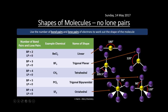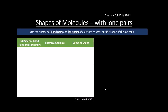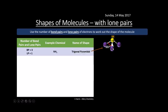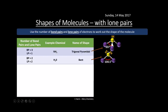Now for shapes with lone pairs. With 3 bond pairs and 1 lone pair, we get a trigonal pyramidal shape - ammonia is an example with a bond angle of 107°, reduced from 109.5° by 2.5° for the lone pair. With 2 bond pairs and 2 lone pairs, we get a bent molecule - water is the example with a bond angle of 104.5°, reduced by two lots of 2.5° (5° total) from the tetrahedral base.